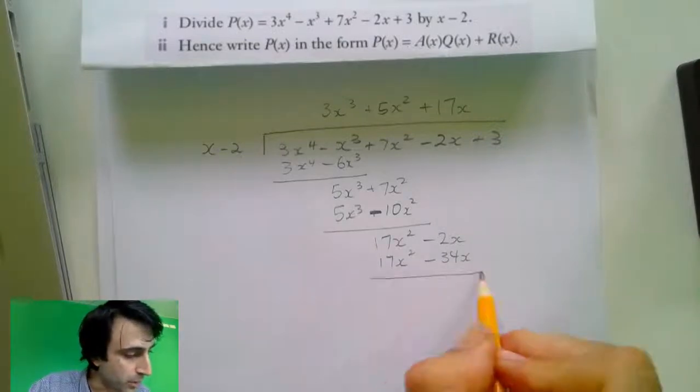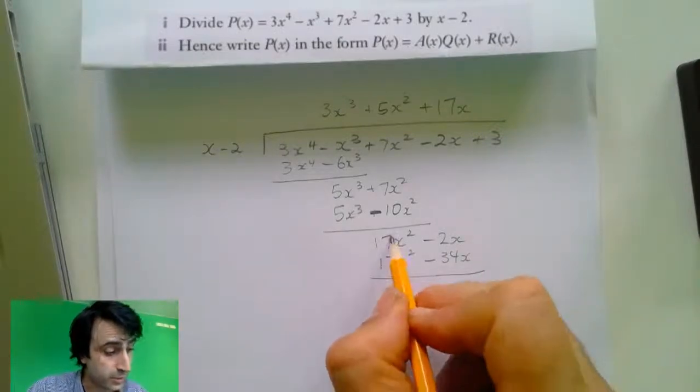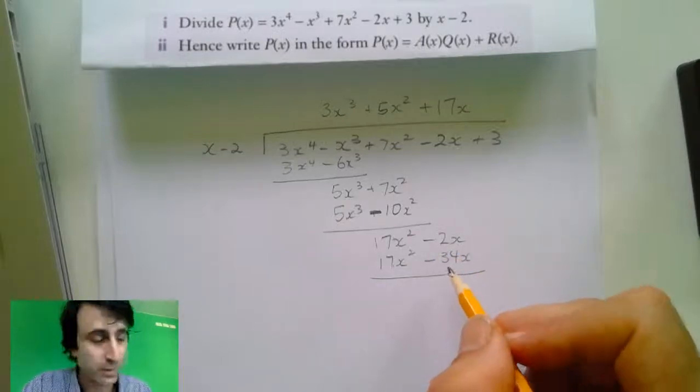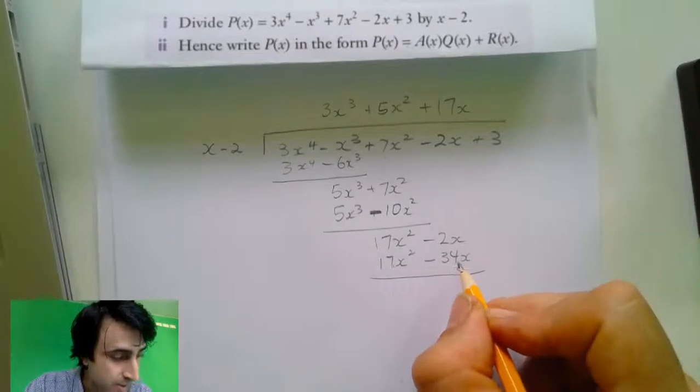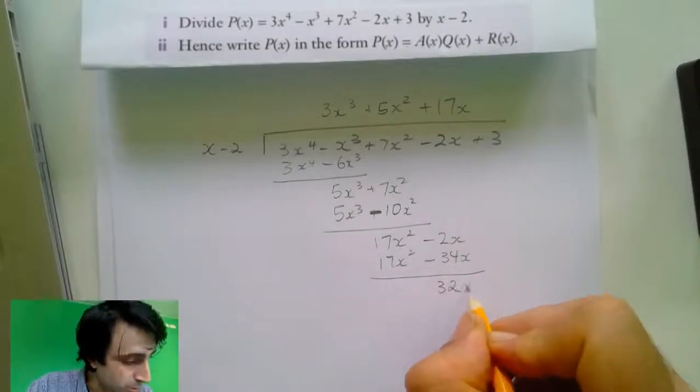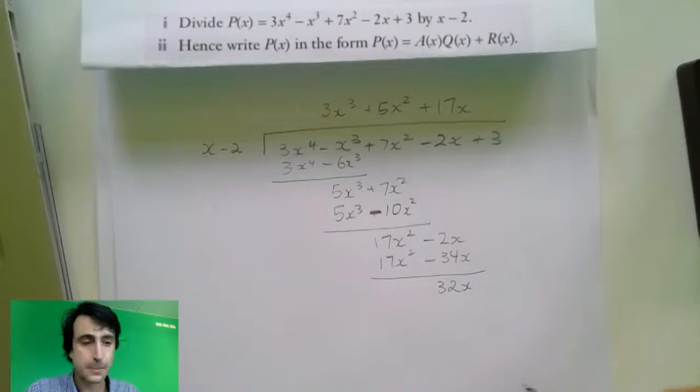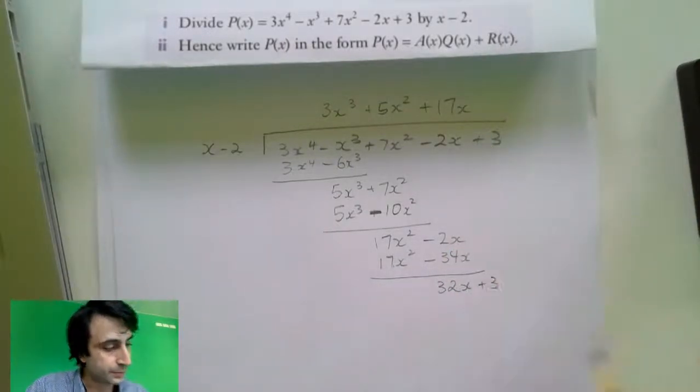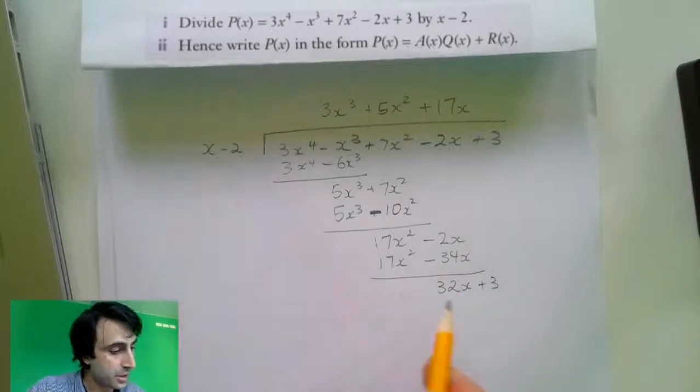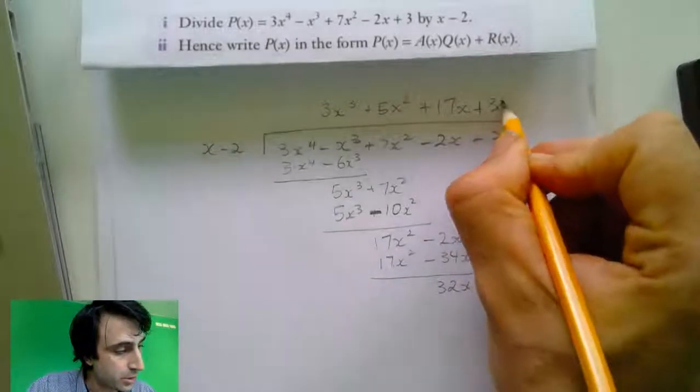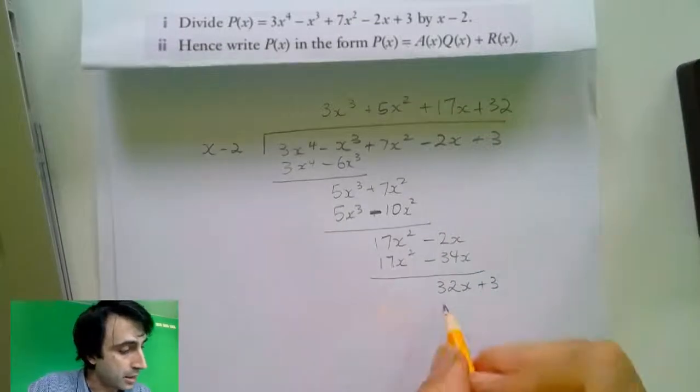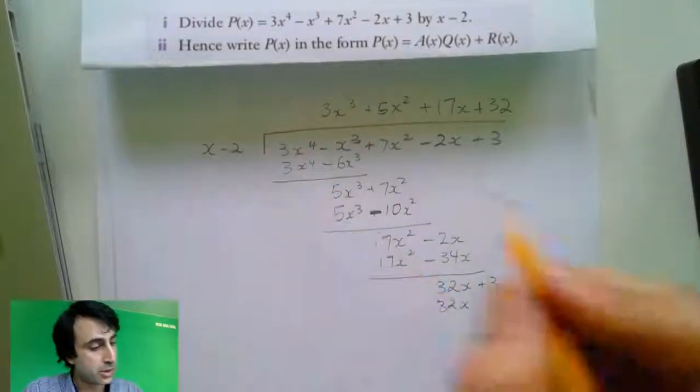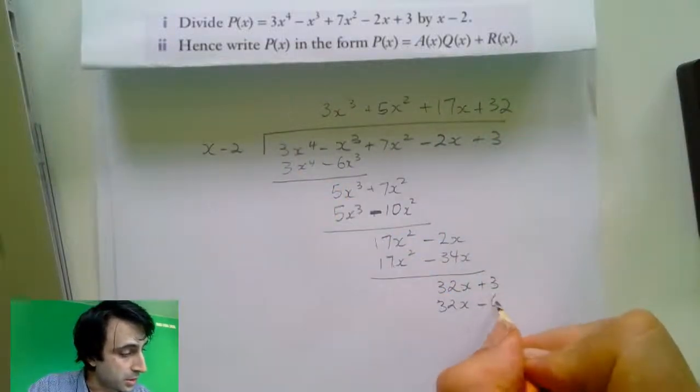17x times by negative 2 equals negative 34x. Now, same thing. Rule a line. First line, take away. Second line. That equals 0. So, minus 2x minus negative 34x is 32x. Bring down the last term here. How many times does x go into 32x? It equals 32 times. And 32 times by x equals 32x. 32 times by negative 2 is minus 64.